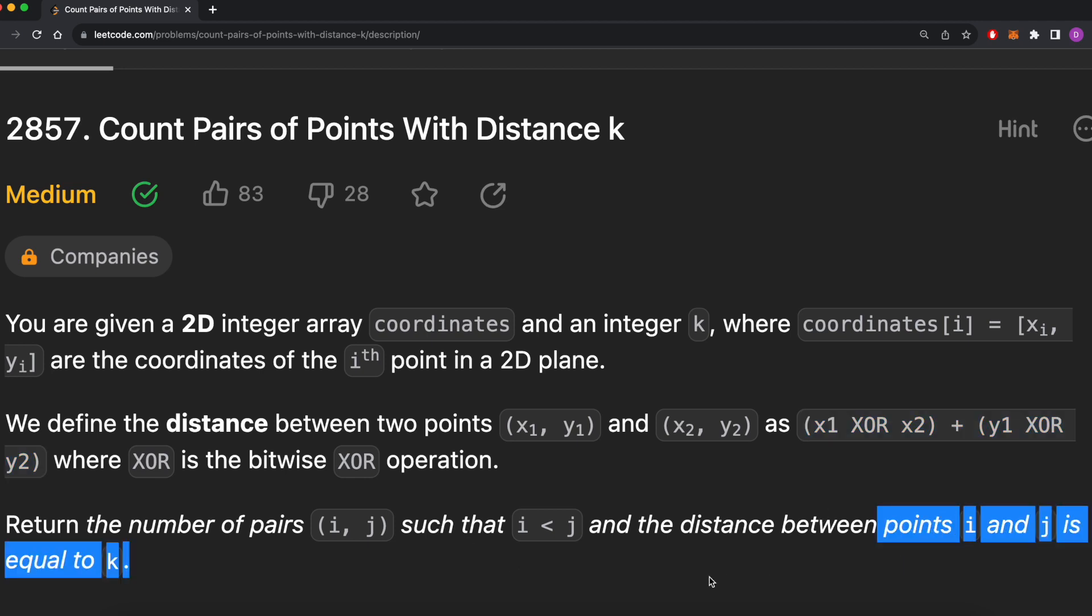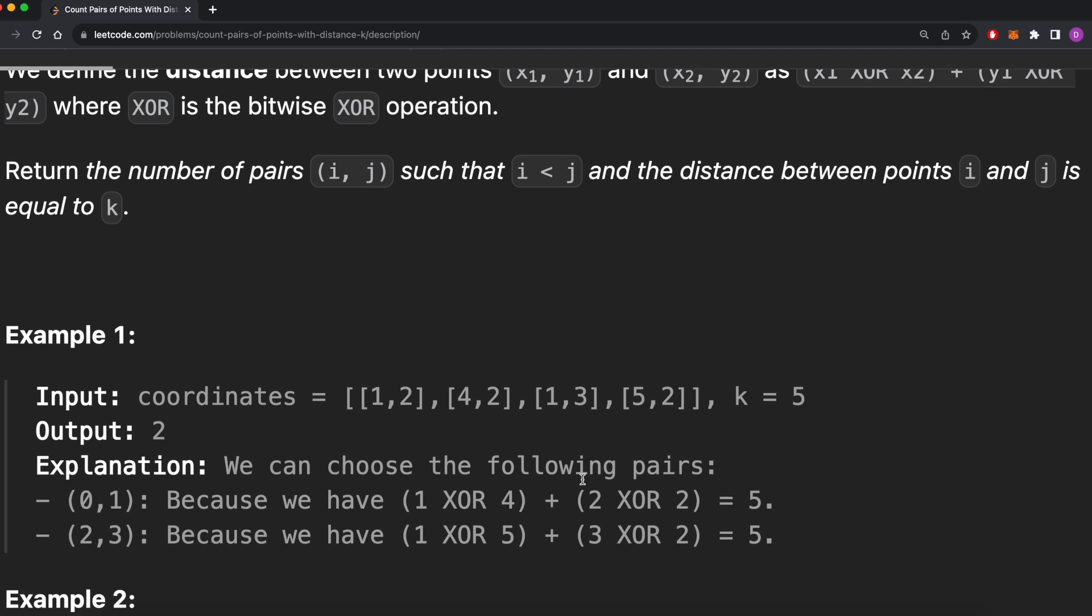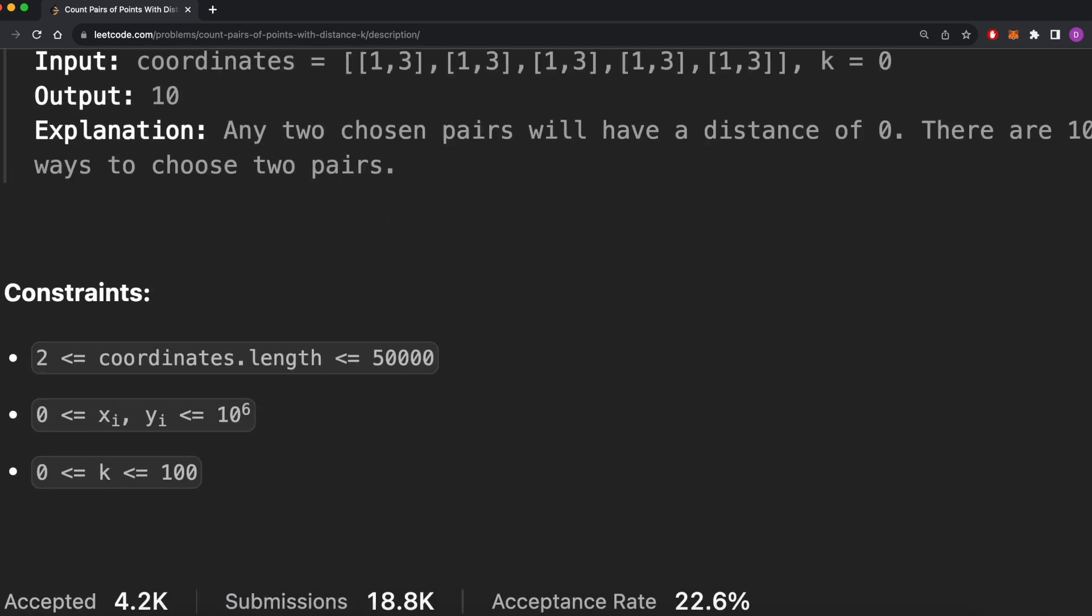Our immediate reaction might be to first do an n-squared algorithm, where we iterate over all possible unique pairs of coordinates and check their distance. But let's take a quick look at the constraints of the problem. The length of coordinates can be anywhere from 2 to 50,000, the coordinates themselves can be from 0 to a million, and k can be between 0 and 100.